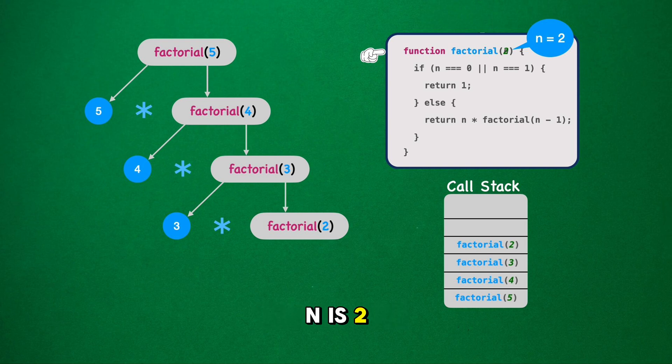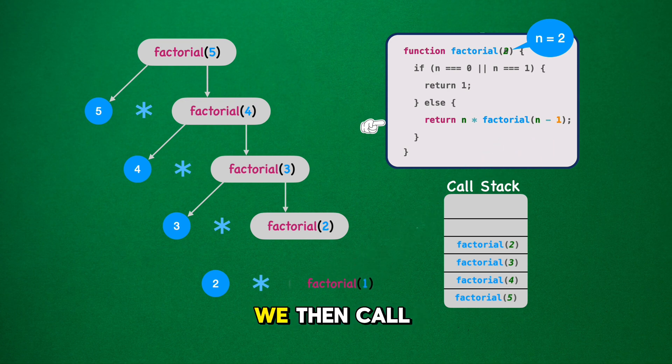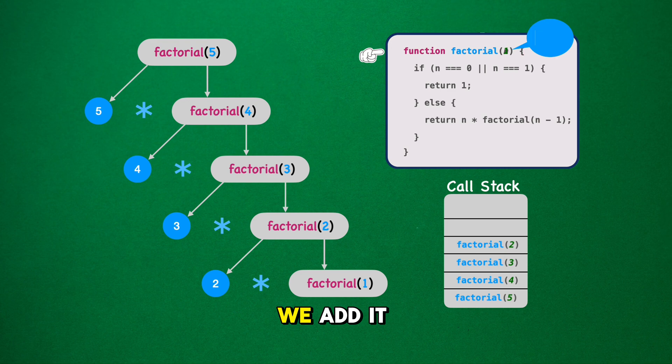We find that n is 2, not yet our base case. The else path beckons us forward once more. This translates to 2 asterisk factorial 1 in our process. We then call factorial 1. This time, as we add it to the stack, it takes a special place at the very top.